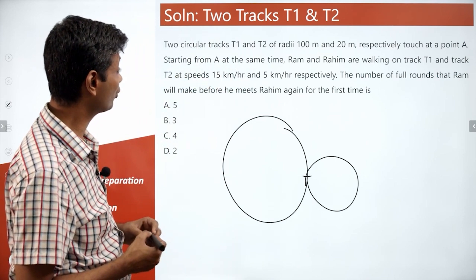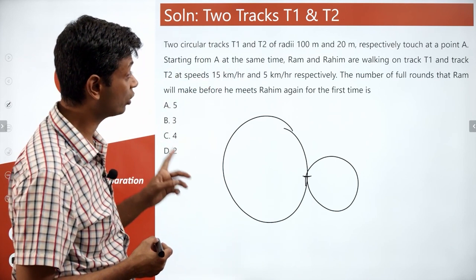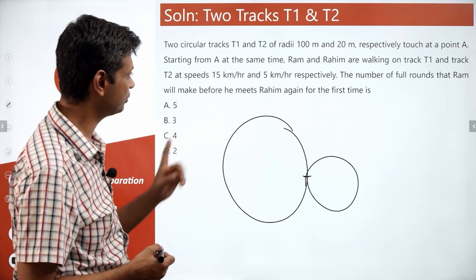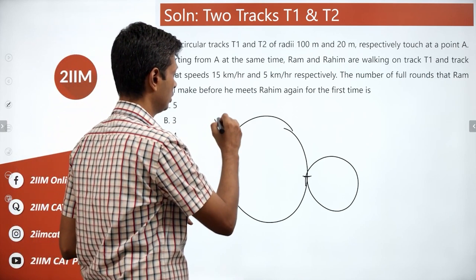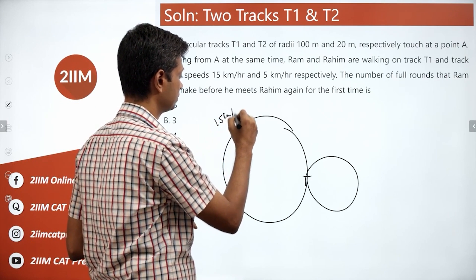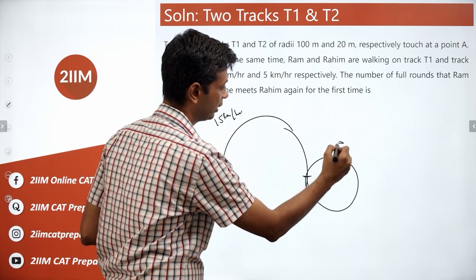Starting from A at the same time, Ram and Rahim are walking on track T1 and track T2 at speeds 15 and 5, 15 kilometers per hour, 5 kilometers per hour.